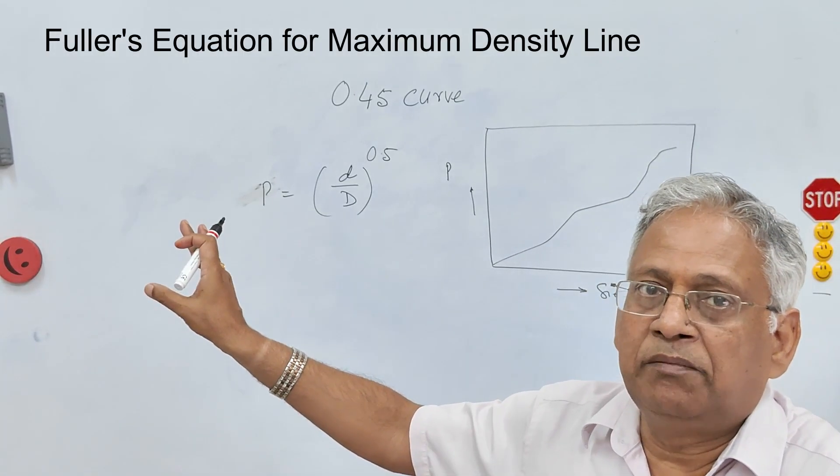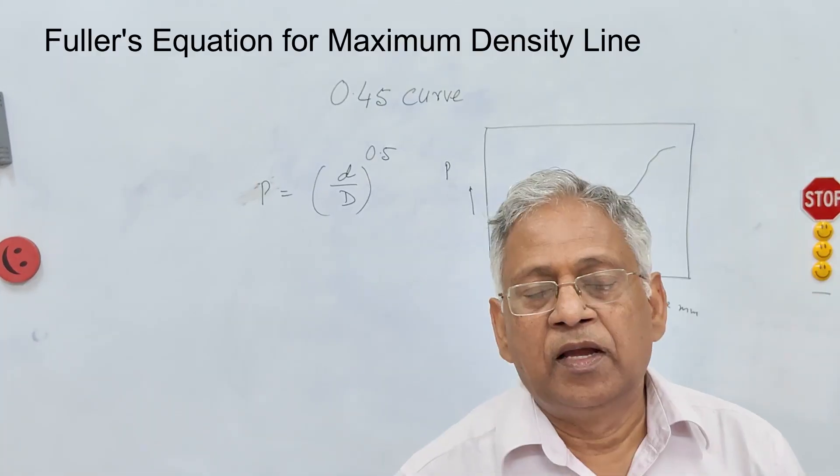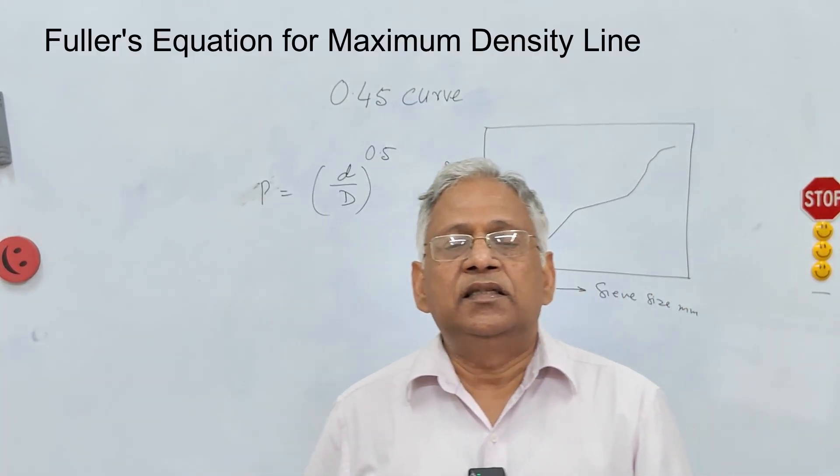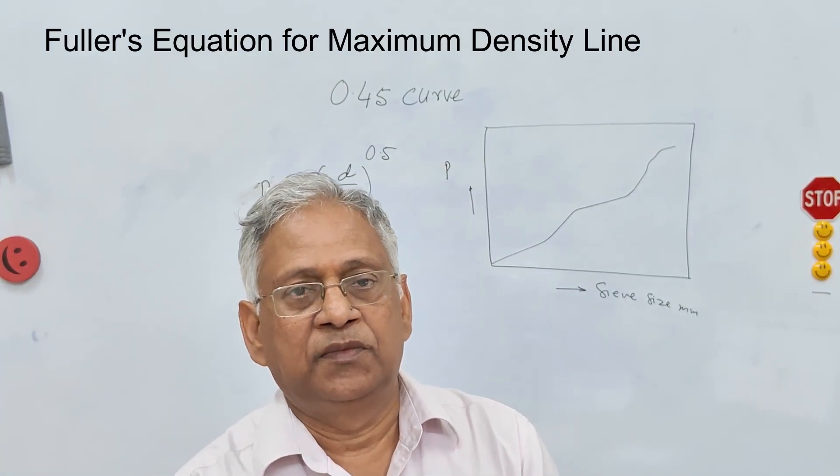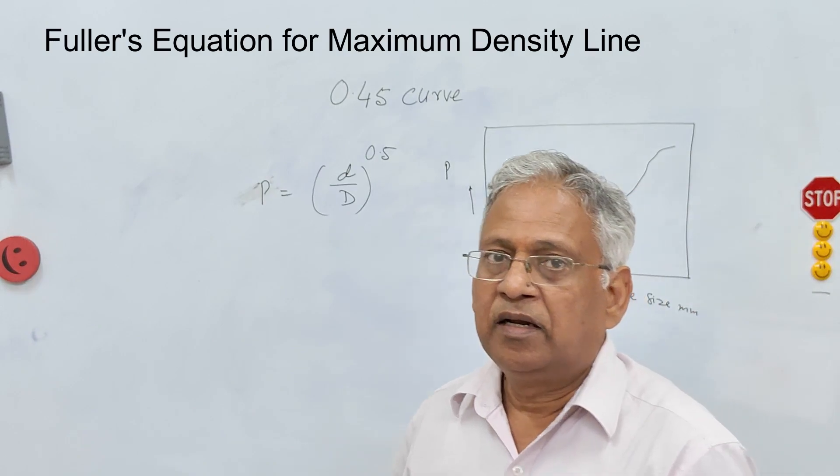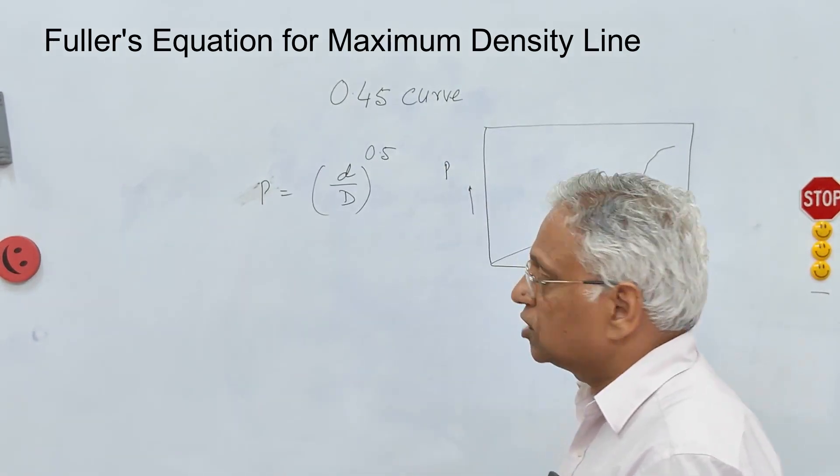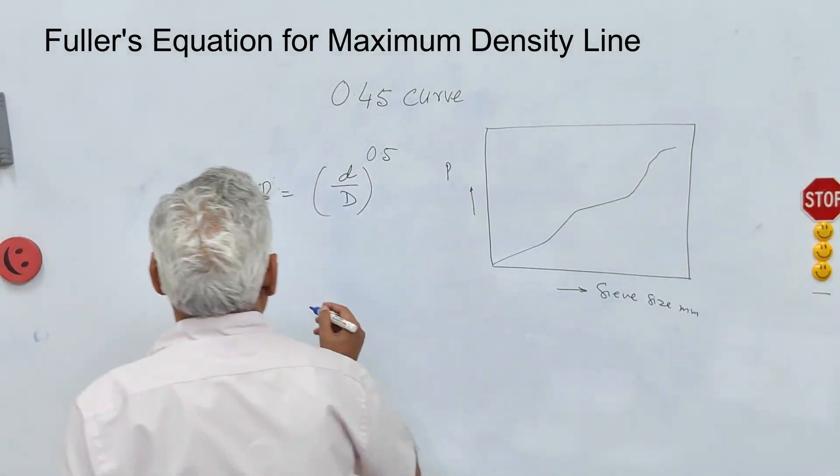This equation gives you the maximum density line and it has been used for several years. But in the early 1960s FHWA provided charts which correspond to 0.45 curve.